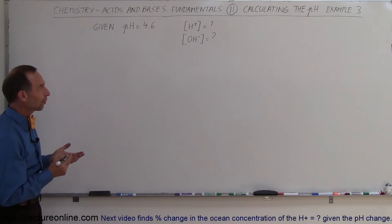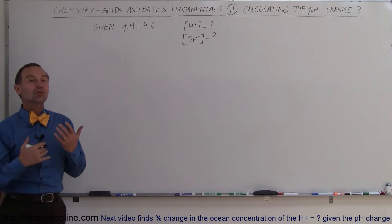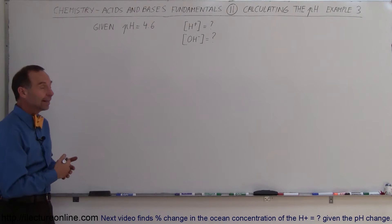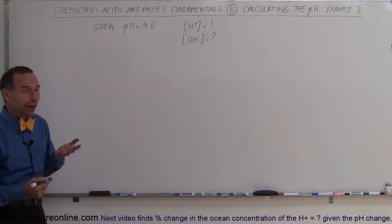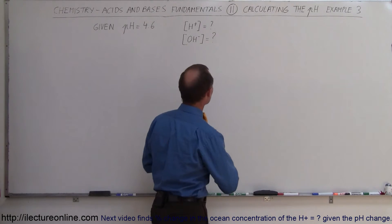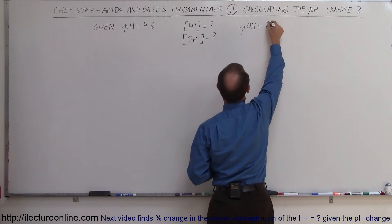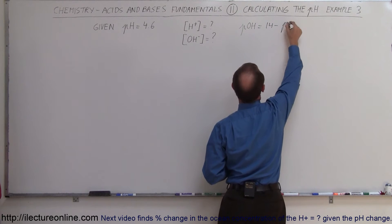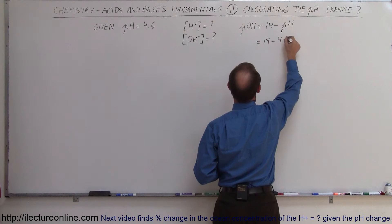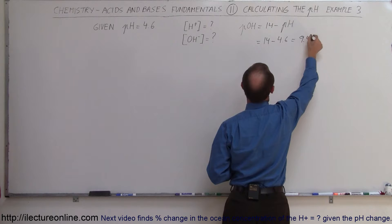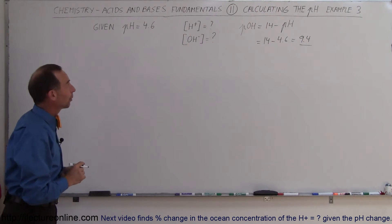Welcome to iLectureOnline. In this third example, we calculate the concentration of the hydroxide ion and the hydrogen ion given a pH of 4.6. Since the pH is 4.6, the pOH is equal to 14 minus 4.6, which equals 9.4. So the pOH is 9.4 and the pH is 4.6.